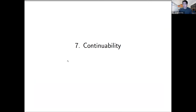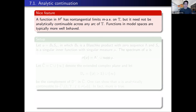I want to move on to continuability properties for functions in model spaces. A nice feature of model spaces is that their elements have great boundary behavior. A function in H² has non-tangential limits almost everywhere on the circle, but doesn't actually have to be analytically continuable across any arc of the circle. Very classical arguments using gap series show that a typical H² function doesn't have to be analytically continuable anywhere at all. But functions in model spaces are typically a lot more well-behaved.